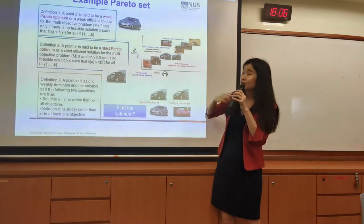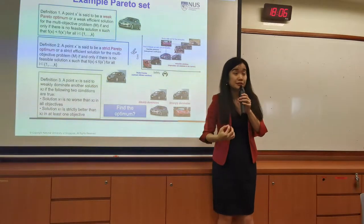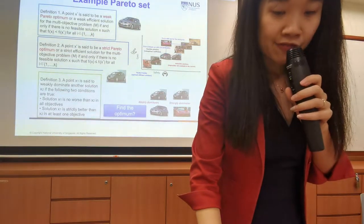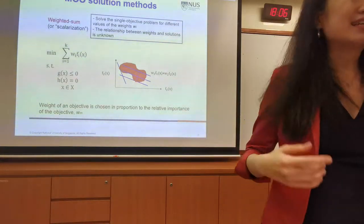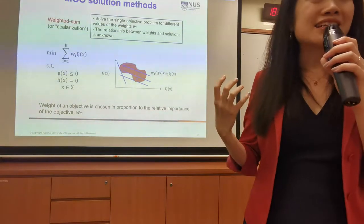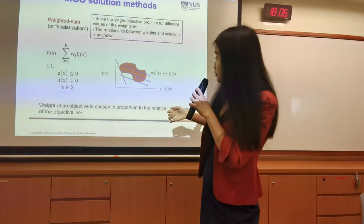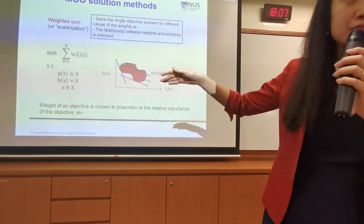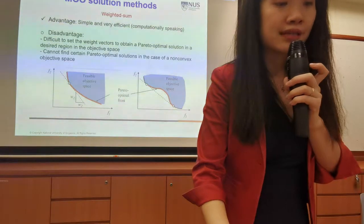A strict Pareto solution is one that is not dominated in any dimension. This is how we decide the Pareto curve and get the optimal solutions along the line. We introduced methods such as the weighted sum, where you tune the weighting factors — either deciding one set of weighting parameters to get a single objective, or iteratively changing the weights to get a series of optimal Pareto curve solutions.